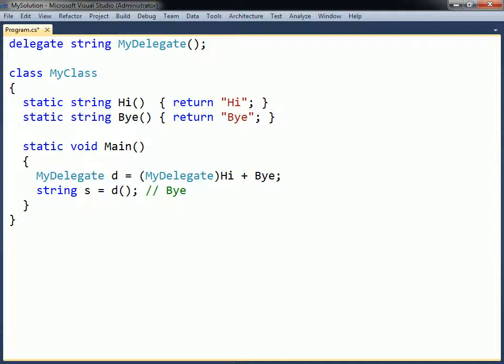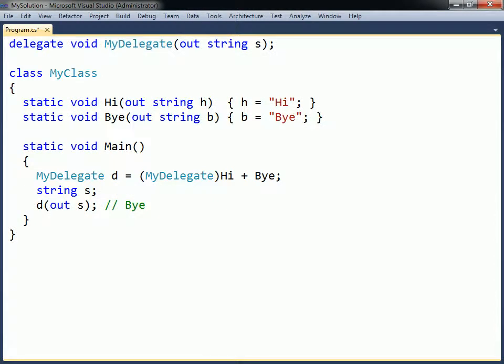If the delegate returns a value, only the value of the last invoked method will be returned. Likewise, if the delegate has an out parameter, its final value will be the value assigned by the last method.